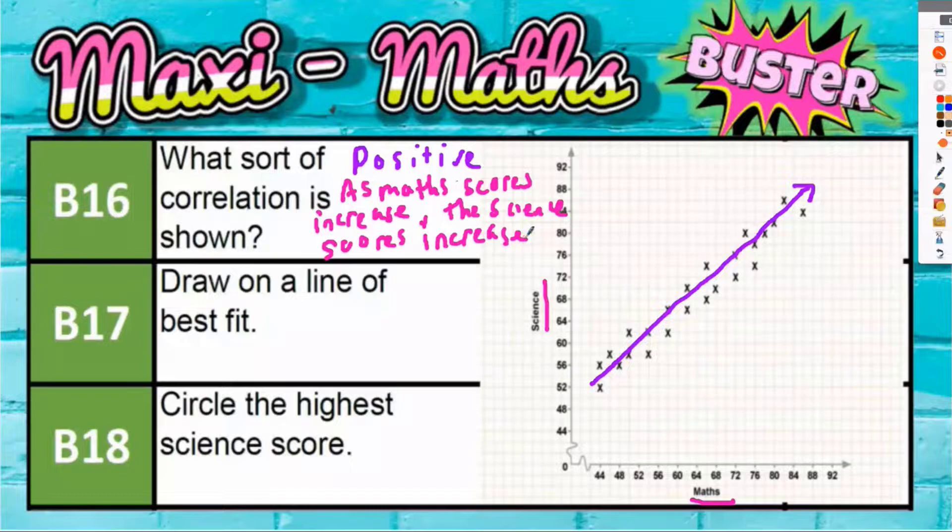It isn't impossible that you could get someone who was an outlier. An outlier could be down here. This would mean that that person is quite far along on the maths scale, so they've got quite a high math score, but then they're quite low down on the science scale.